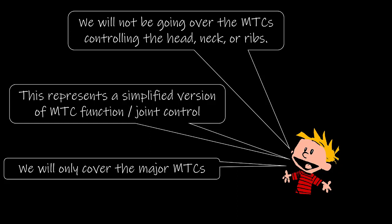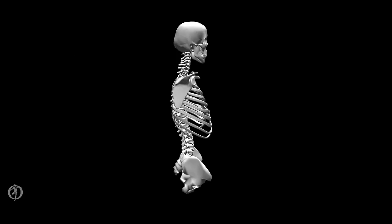With these cautions in mind, let's begin in the thoracolumbar region. In the sagittal plane, there is a mediolateral axis that goes through the superior portion of the inferior vertebral body. Any MTCs that have a force vector that is posterior to this axis will create a torque that will extend the thoracolumbar spine, while any MTCs that have a force vector that is anterior to this axis of rotation will create a torque that will flex the thoracolumbar spine.